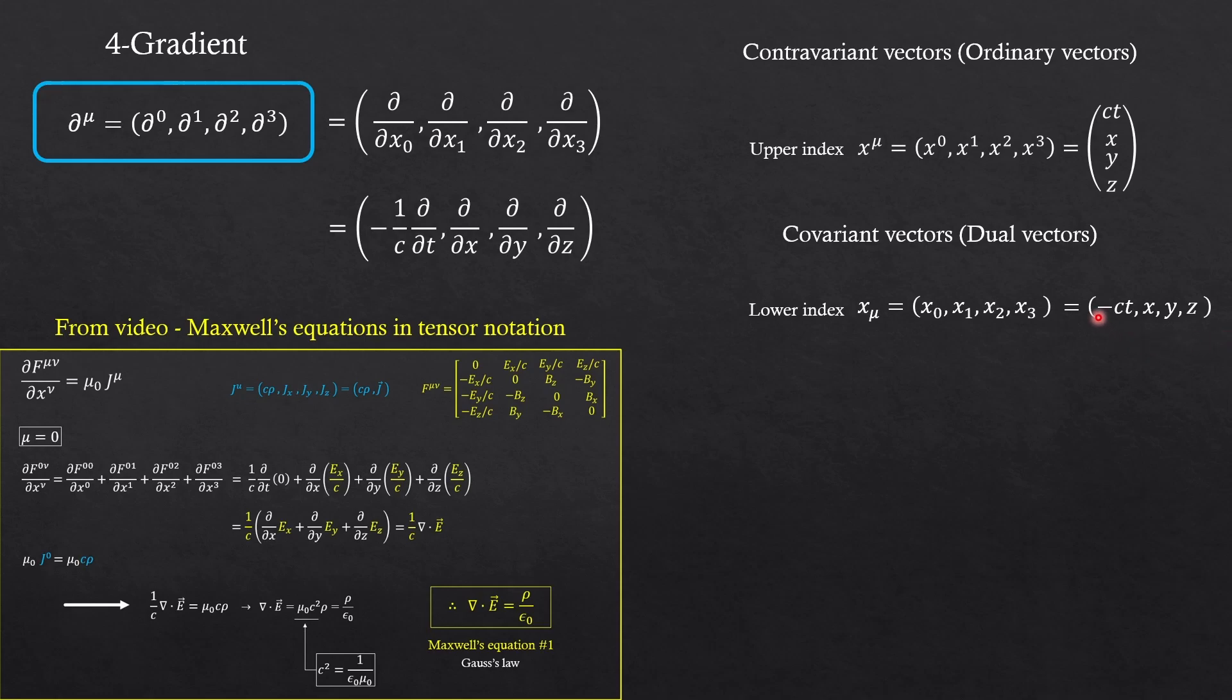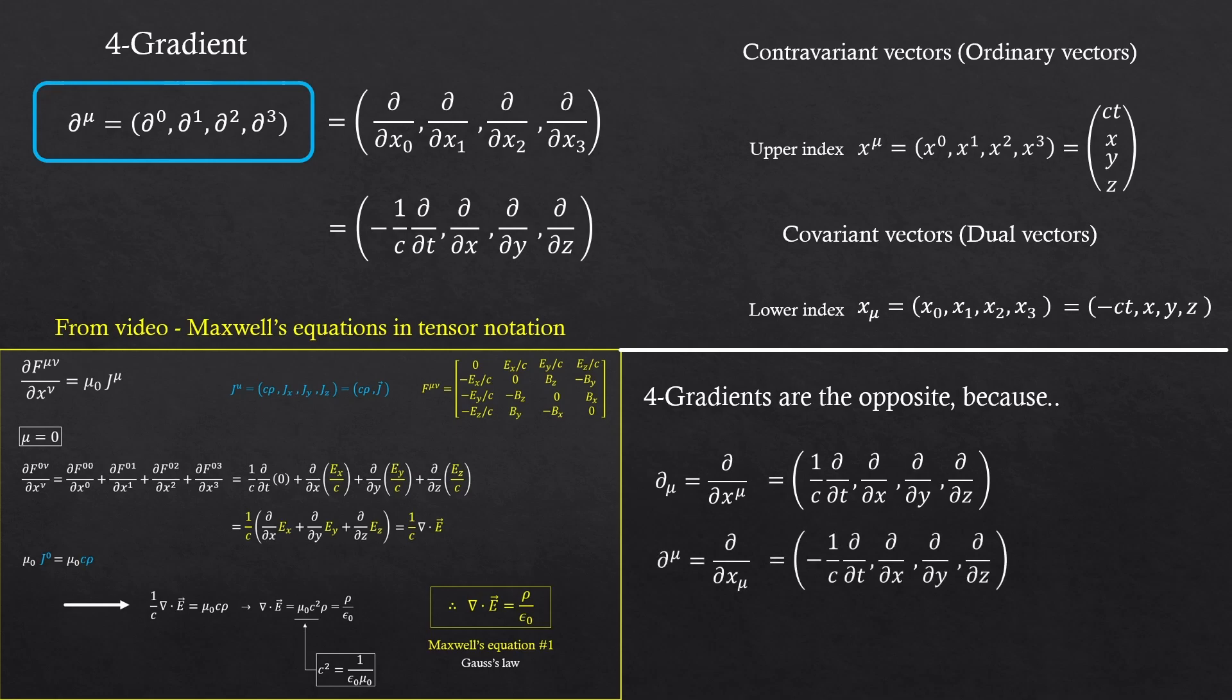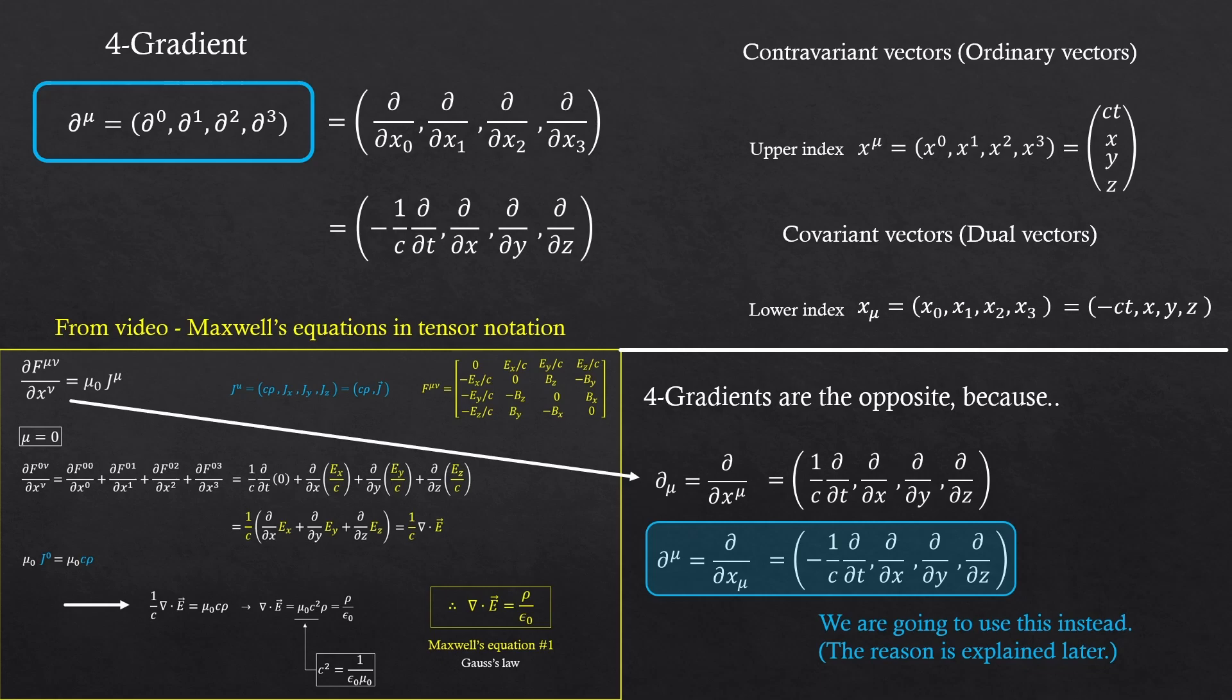And another extra extra knowledge. The covariant vectors are the horizontal row vectors. And contravariant vectors are the vertical column vectors in math. But that's not critically important here. Four gradients are the opposite. Because here, the lower index indicates the upper index in the denominator. And four gradient with the upper index indicates the lower index in the denominator. This is what we used in the other video. Here, we are going to use this instead. The upper index one. Why though, I'll explain it very soon.